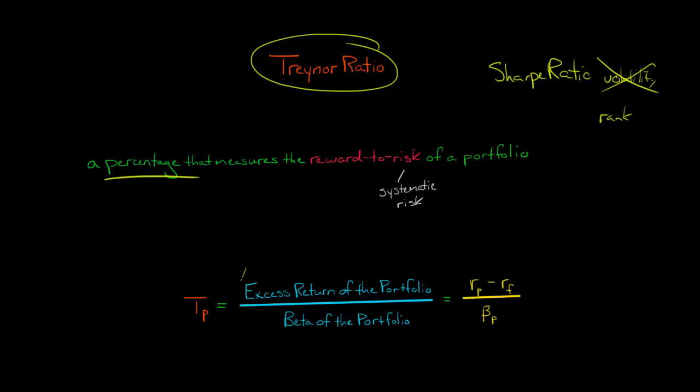When we calculate this Treynor ratio, the excess return of the portfolio is going to be the expected return of the portfolio minus the risk-free rate. Then we divide that by the beta of the portfolio.